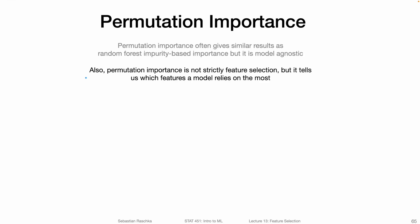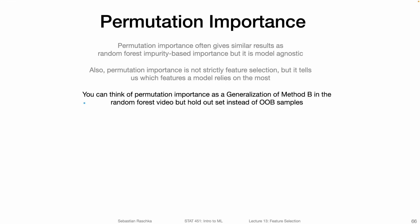Permutation importance often gives us similar results as random forest importance based on impurity. But the nice thing about permutation importance is that it is model agnostic, which means it's not restricted to random forests — we can use it with any type of machine learning algorithm or model. I have to admit that permutation importance is not strictly feature selection, but it tells us which feature a model relies on the most. Feature importance is not feature selection, but we can use feature importance measures to select features, which is why I am covering it here in the feature selection lecture.